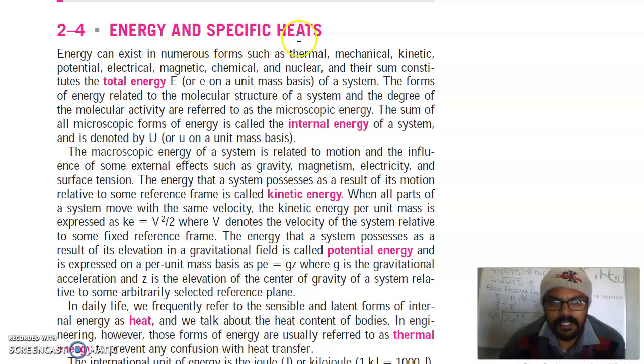Energy and specific heats. Energy can exist in numerous forms such as thermal, mechanical, kinetic, potential, electrical, magnetic, chemical and nuclear. And their sum constitutes the total energy of a system. The forms of energy related to the molecular structure of a system and the degree of molecular activity are referred to as microscopic energy. The sum of all microscopic forms of energy is called the internal energy of a system and is denoted by U.